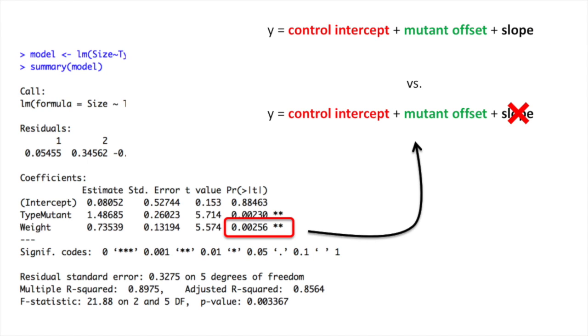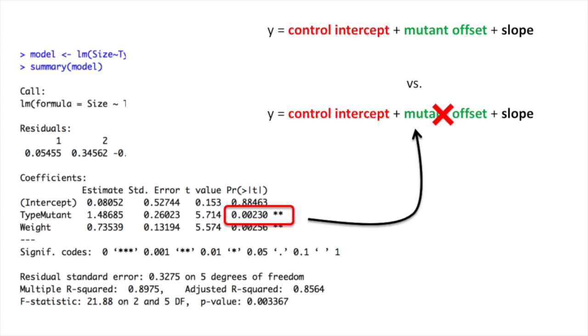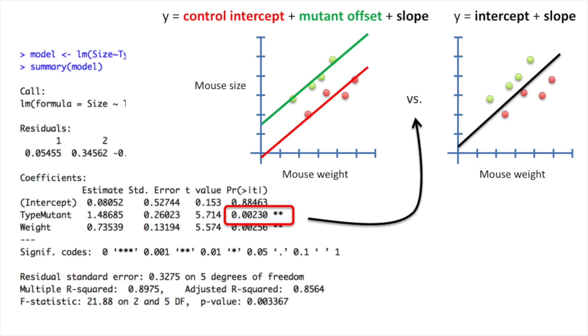In other words, this p-value reflects what would happen if we compared the least squares fit around the original fancy equation to the least squares fit around the fancy equation minus the slope. And since the slope is the weight, this p-value tells us how important the term for the weight is in the fancy equation. This p-value for the type of mouse tells us how much better the fancy equation fits the data than if we had removed the type of mouse information from the equation. This amounts to comparing the fit of the fancy equation to just a simple linear regression.